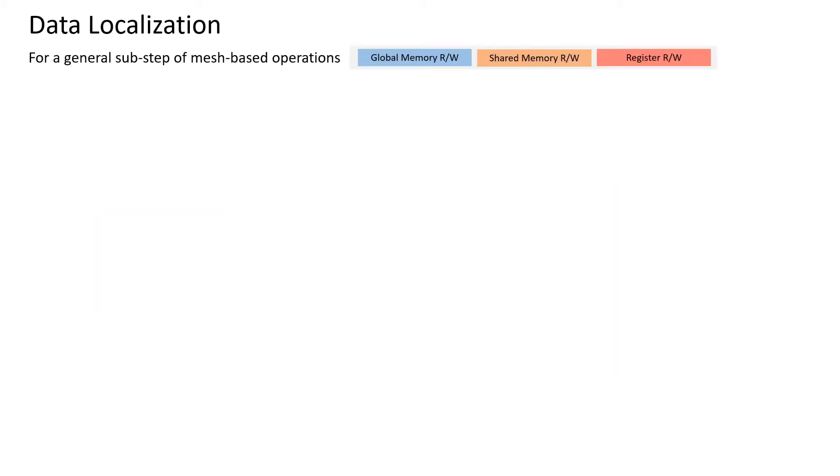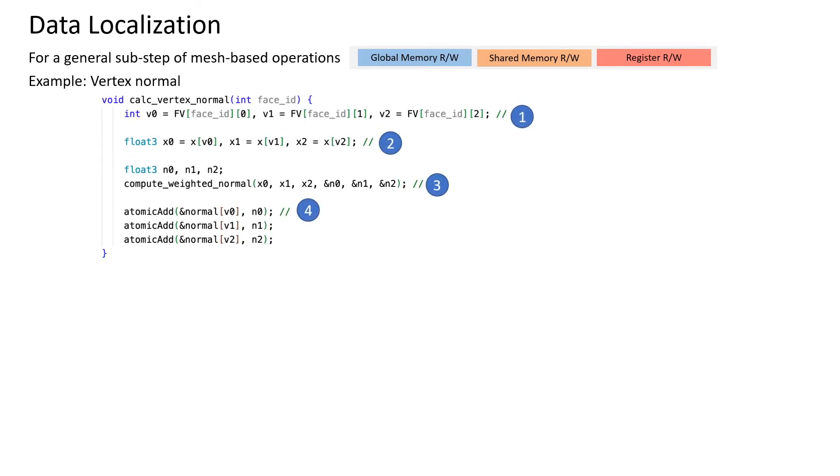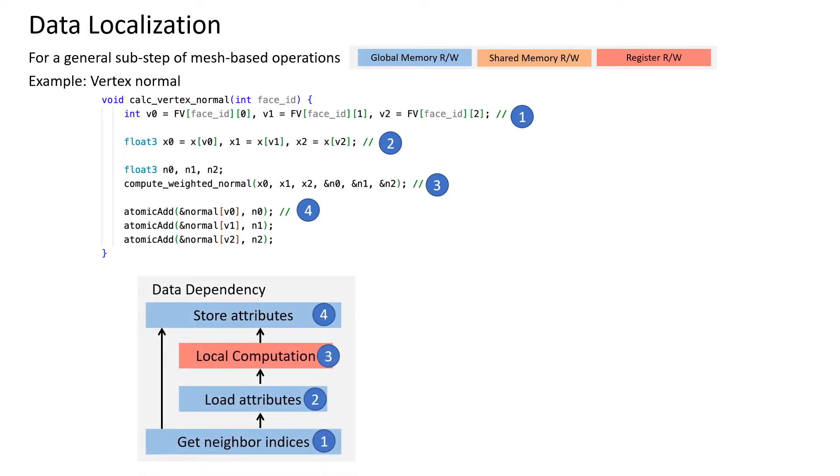However, even having mesh partitioned into blocks, fully relying on the hardware cache scheduling may not be the best option. Let's still look at the vertex normal example, and now focus on its data dependency. Getting neighbor indices and loading data attributes often require out-of-cache global memory access, which can be slow. Once the computations are done, the storing statement brings not only another global memory access, but potential write conflicts as well.